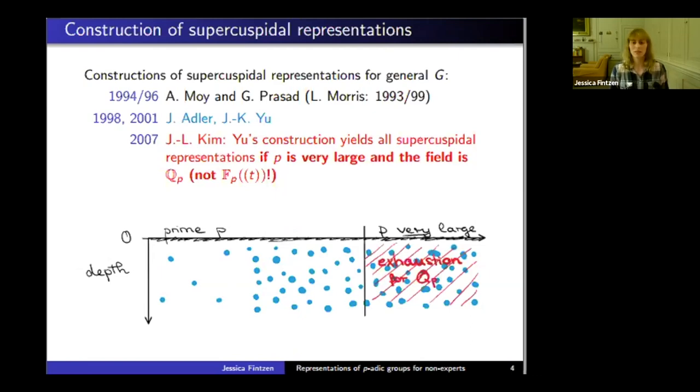Moving forward, you might wonder if Yu's construction gives us everything. Reeder and Yu constructed something they call epipelagic representations.